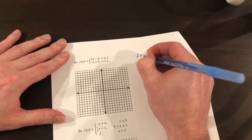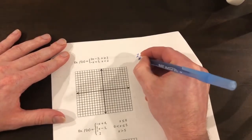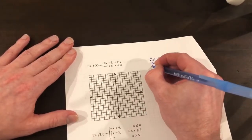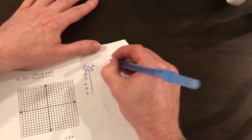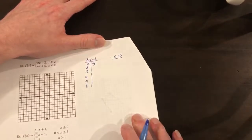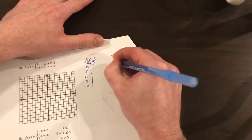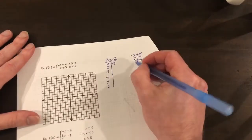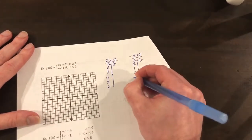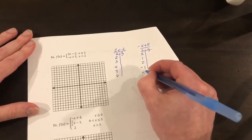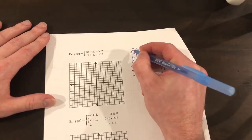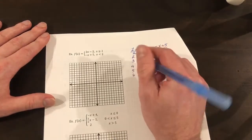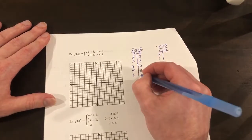Next example problem — same process. We do 2x minus 2, starting at x equals 2 and picking values greater than 2: 3, 4, 5, 6. Plugging in 2: 2 times 2 is 4, minus 2 is 2. For 3: 6 minus 2 is 4. For 4: 8 minus 2 is 6. Then 8, and 10.